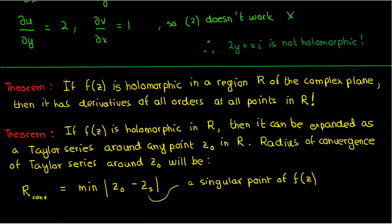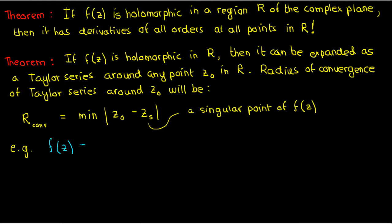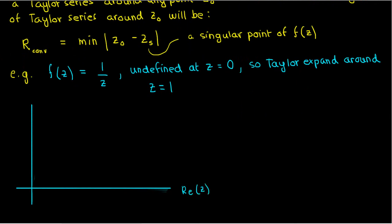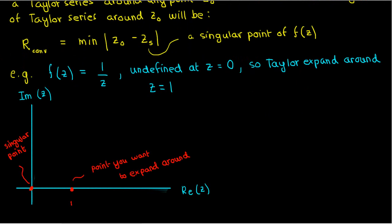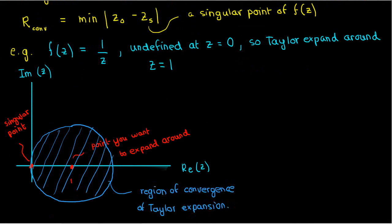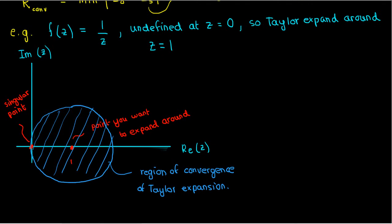To illustrate the radius of convergence, consider the complex function 1/z. We can clearly see that f is undefined at z = 0. So although we can't make a Taylor series expansion around z = 0, we can make one at, say, z = 1. The theorem says that when we make a Taylor expansion of 1/z about z = 1, the region in which it converges is a circle centered at z = 1 with radius 1. Note that because complex numbers exist on a plane, the region of convergence is a circle rather than a mere interval — complex numbers are effectively two-dimensional.